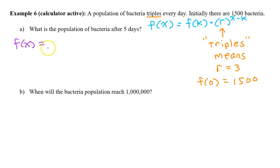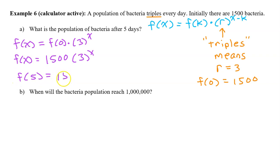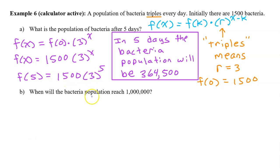Now we can write a function for the population of the bacteria. f(x) equals f(k), which is f(0), times r, which is 3, to the x minus k power — in this case x minus 0, which is just x. f(0) was 1,500, so f(x) = 1,500 times 3 to the x power. We can now use this function to find the population of bacteria after 5 days: f(5) = 1,500 times 3 to the 5th power. In 5 days, the bacteria population will be 364,500.